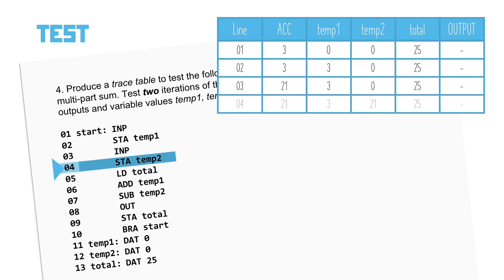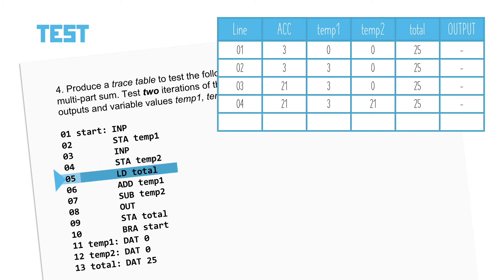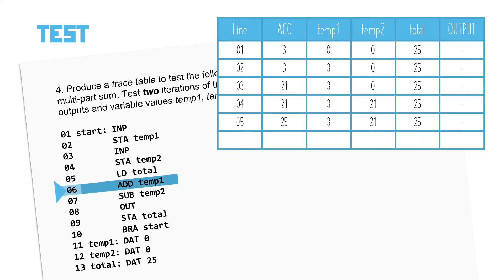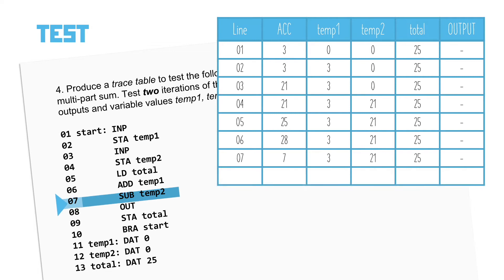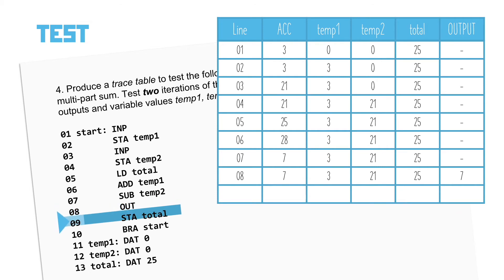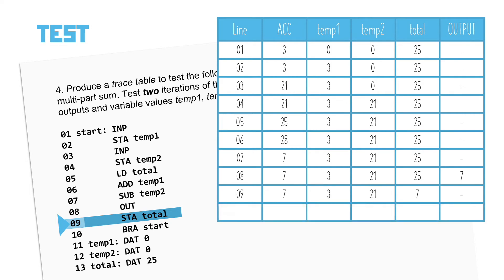The next line is another input command — the question has said that 21 would be the input, which ends up in the accumulator. Line 4 stores the value into temp2, so that value changes to 21 as well. We're next going to load the value from total into the accumulator, meaning its new value is 25. The ADD instruction on line 6 will add the value of temp1 to what's in the accumulator — that's 25 plus 3, giving us 28. Line 7 is a subtract which takes away the value of temp2 from the accumulator — 28 minus 21 gives us 7. The next line is a simple output, so the current value of the accumulator is shown on the screen.